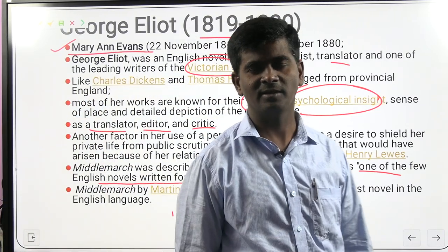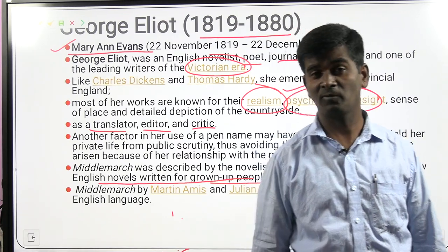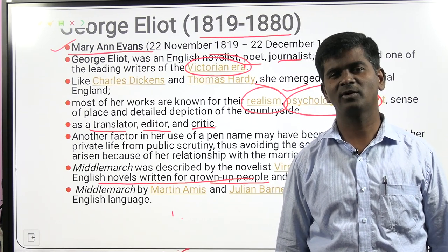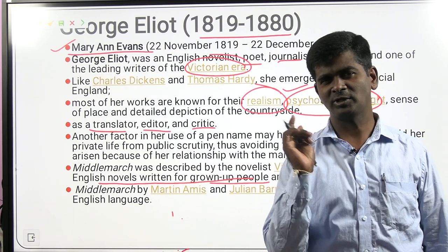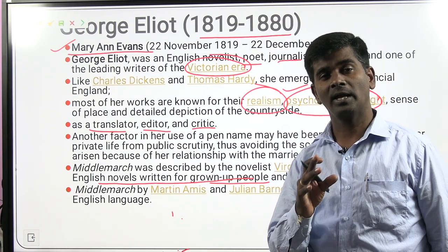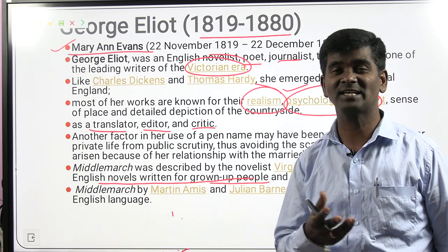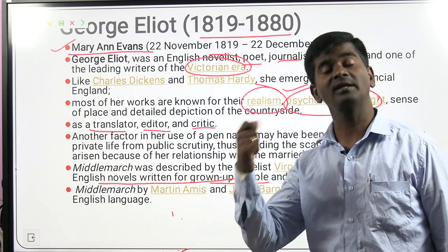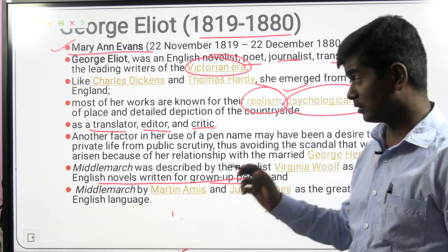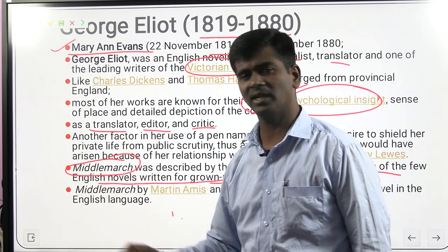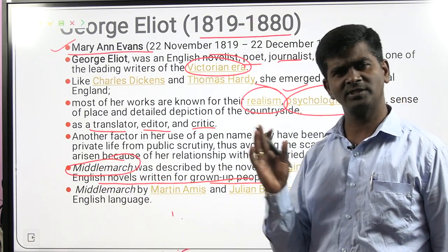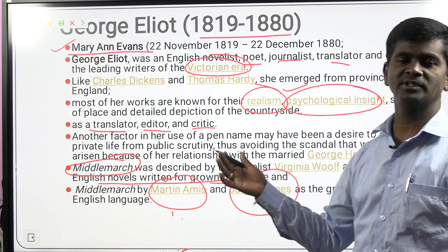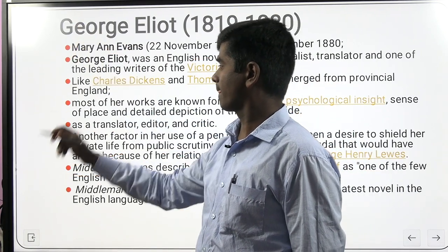Virginia Woolf described her as one of the few English novelists who wrote for grown-up people. In A Room of One's Own, Woolf admires writers like Jane Austen, George Eliot, and the Brontës — describing the struggle they faced in order to write literature. George Eliot's most popular novel is Middlemarch, also described as a Gothic novel. Martin Amis and Julian Barnes also described the greatness of Middlemarch.